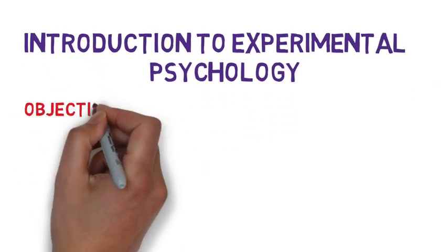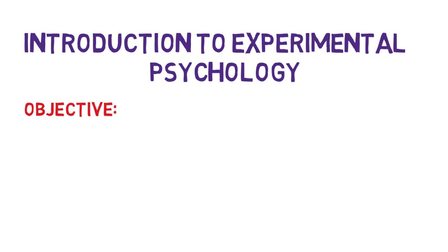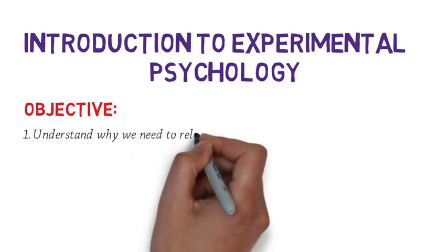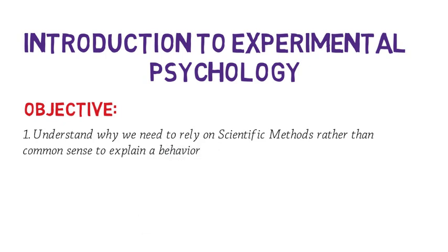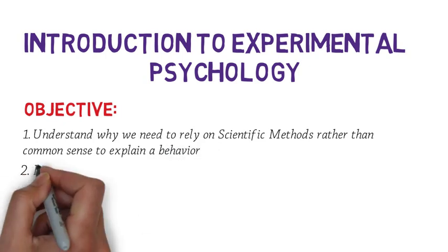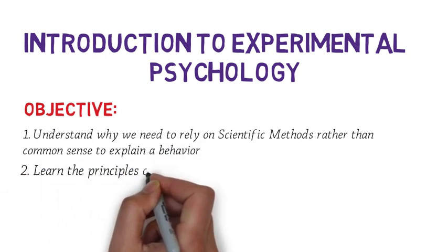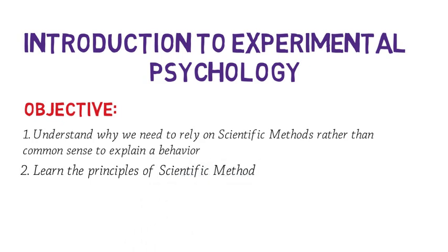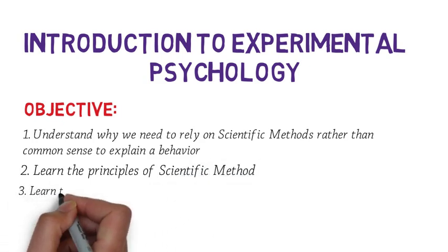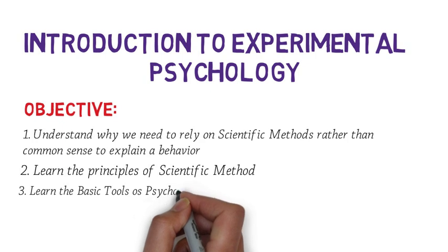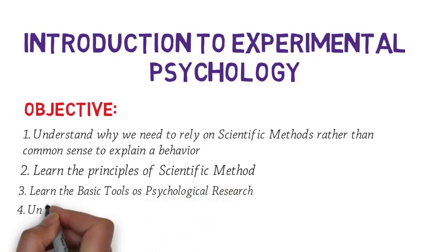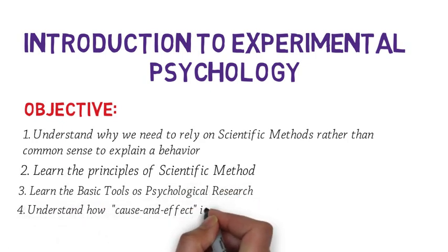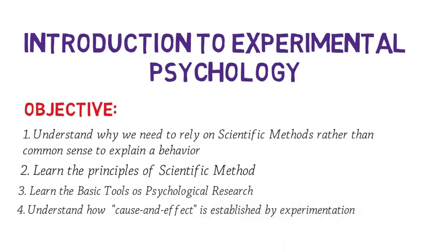Our objective for today is to, first, understand why we rely on scientific methods rather than common sense to explain a behavior. Second, you guys must also learn the principles of the scientific method. And third, the basic tools of psychological research, you must also learn that. And lastly, you guys must also understand how cause and effect is established by experimentation.